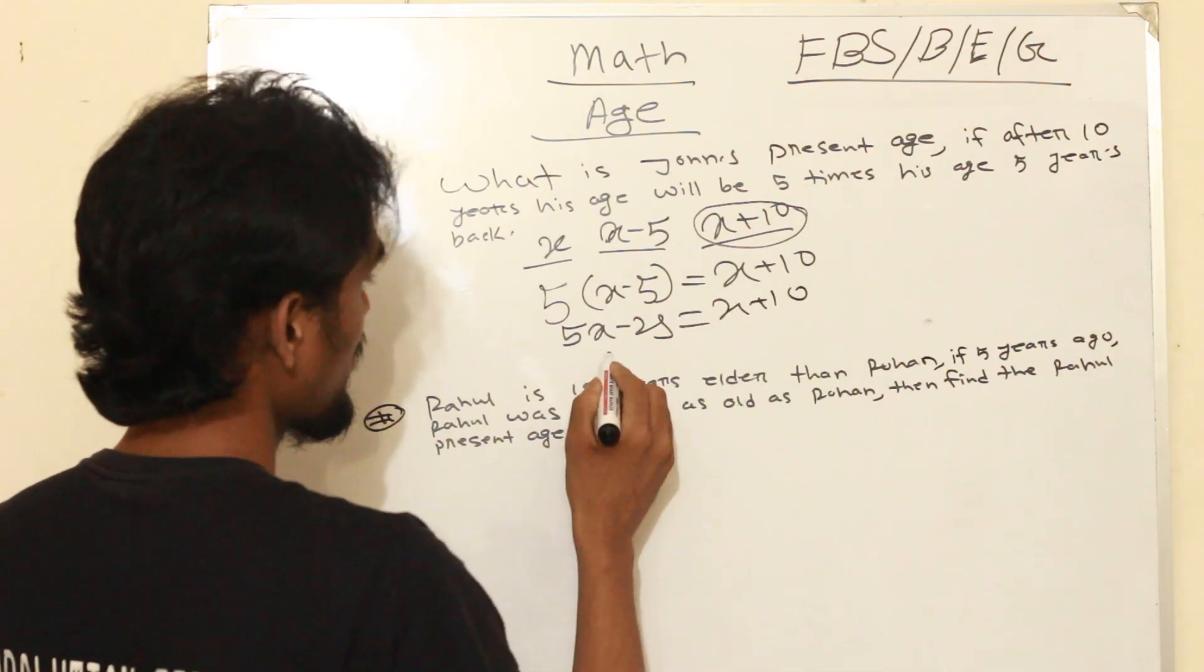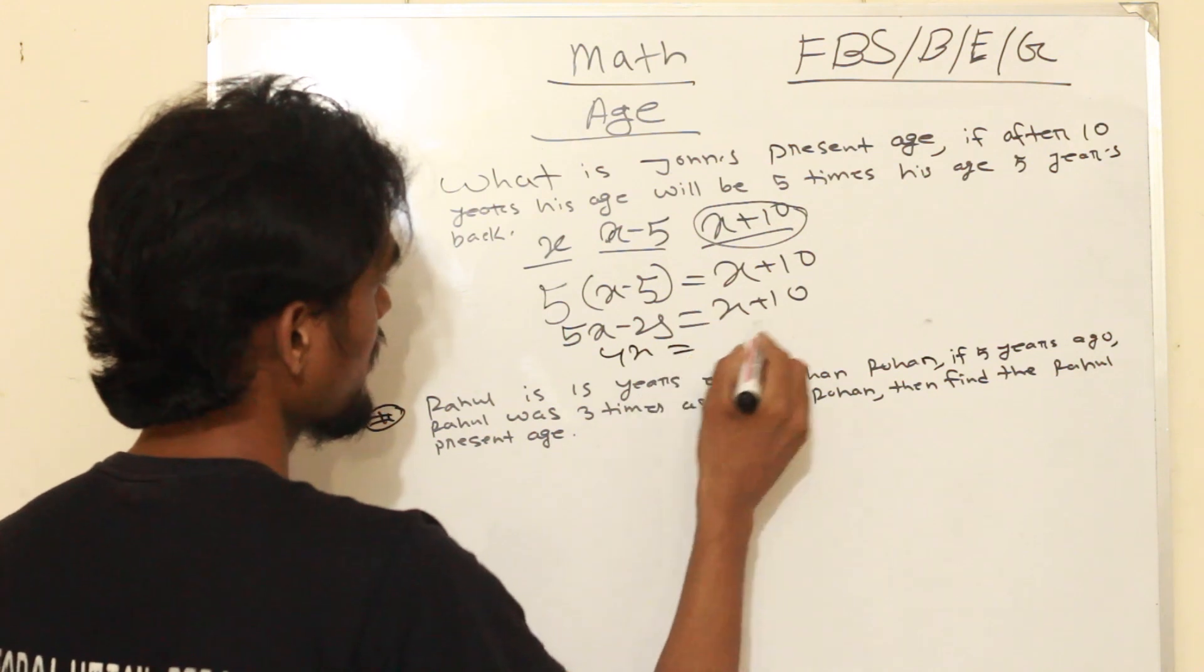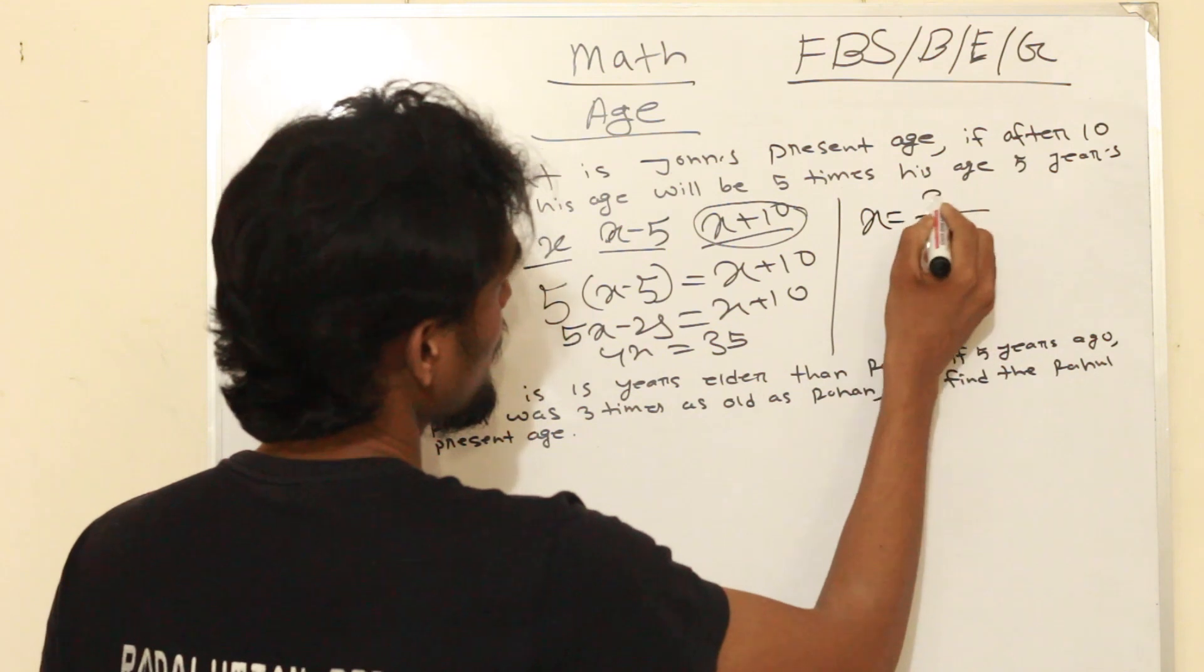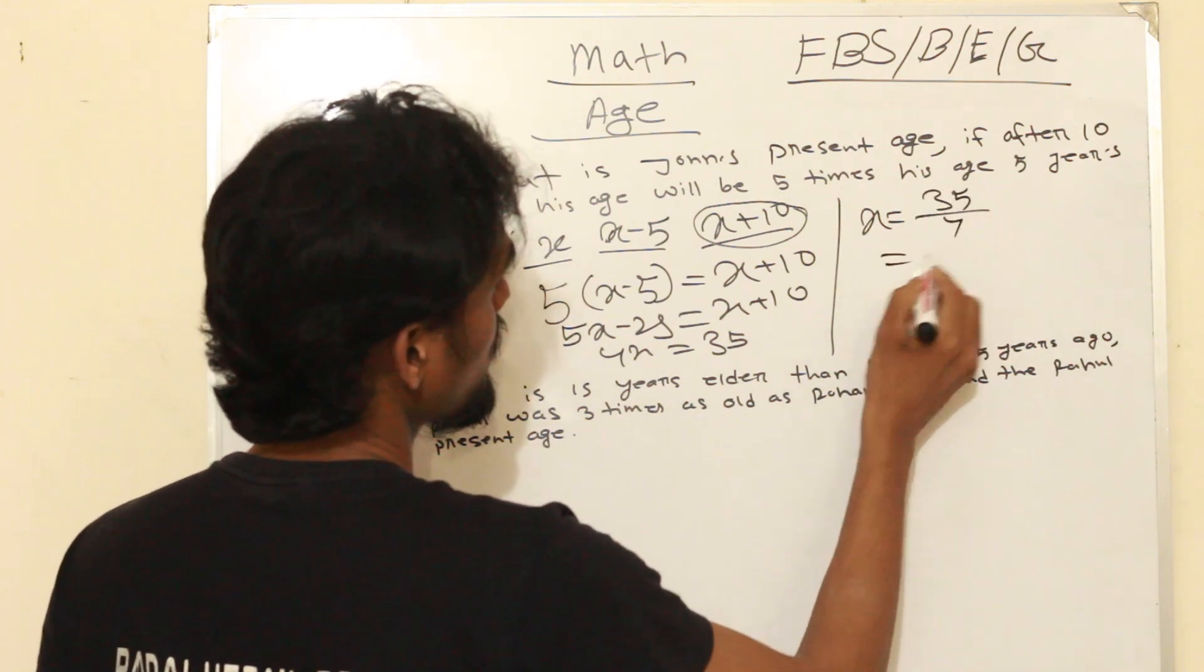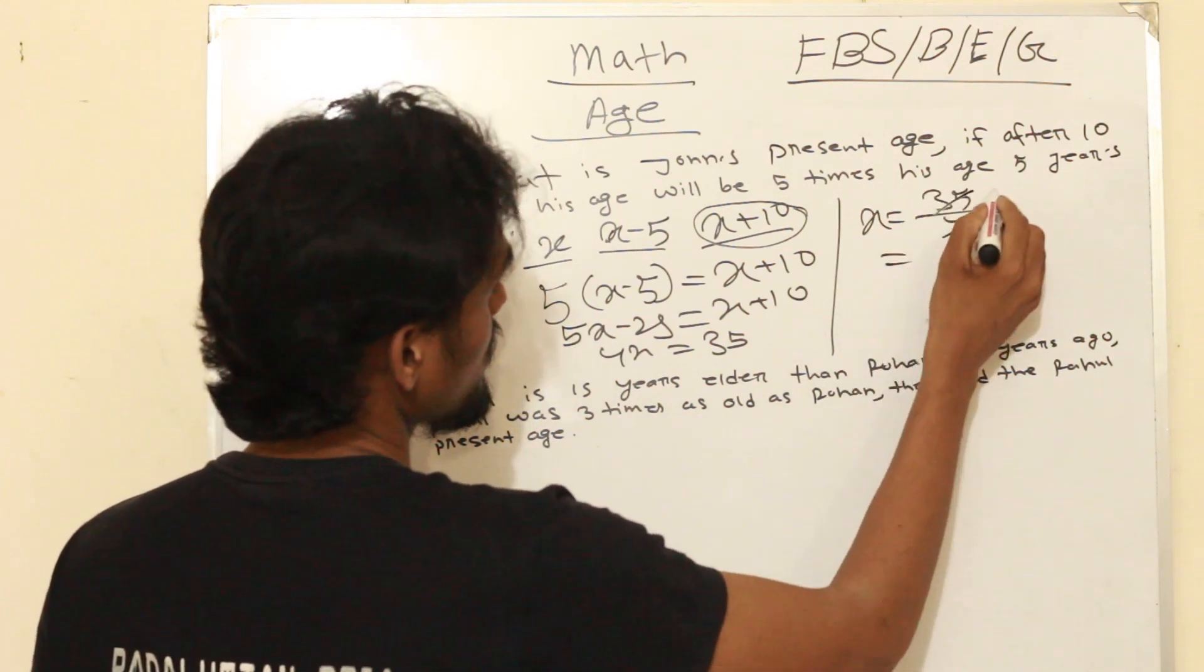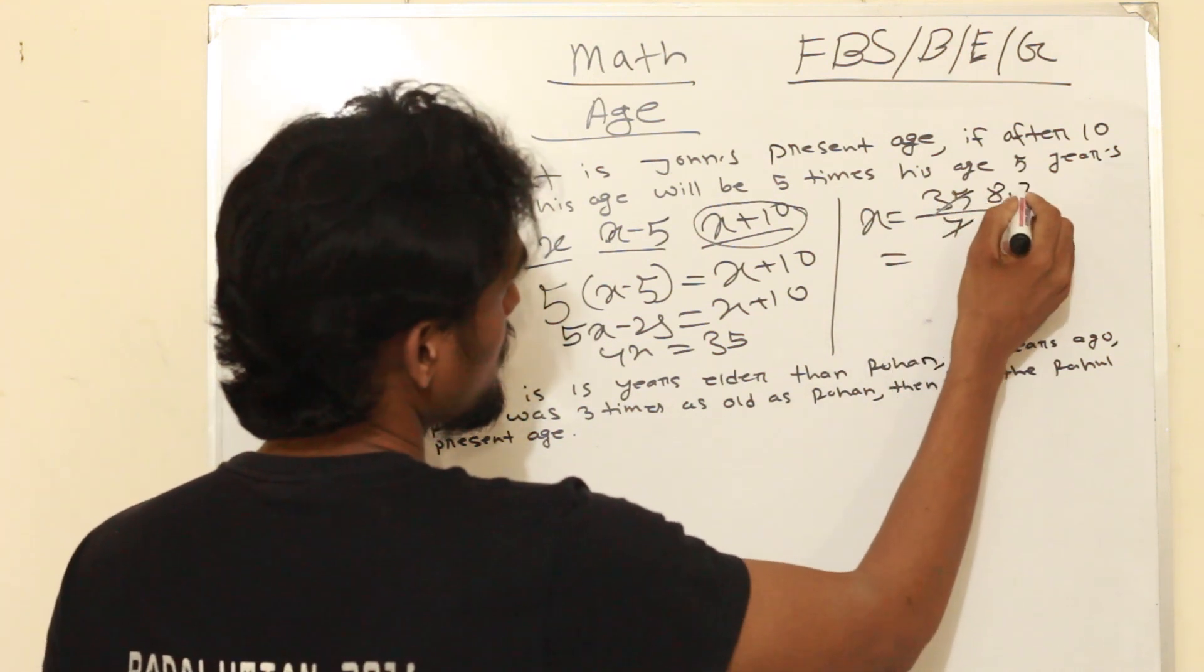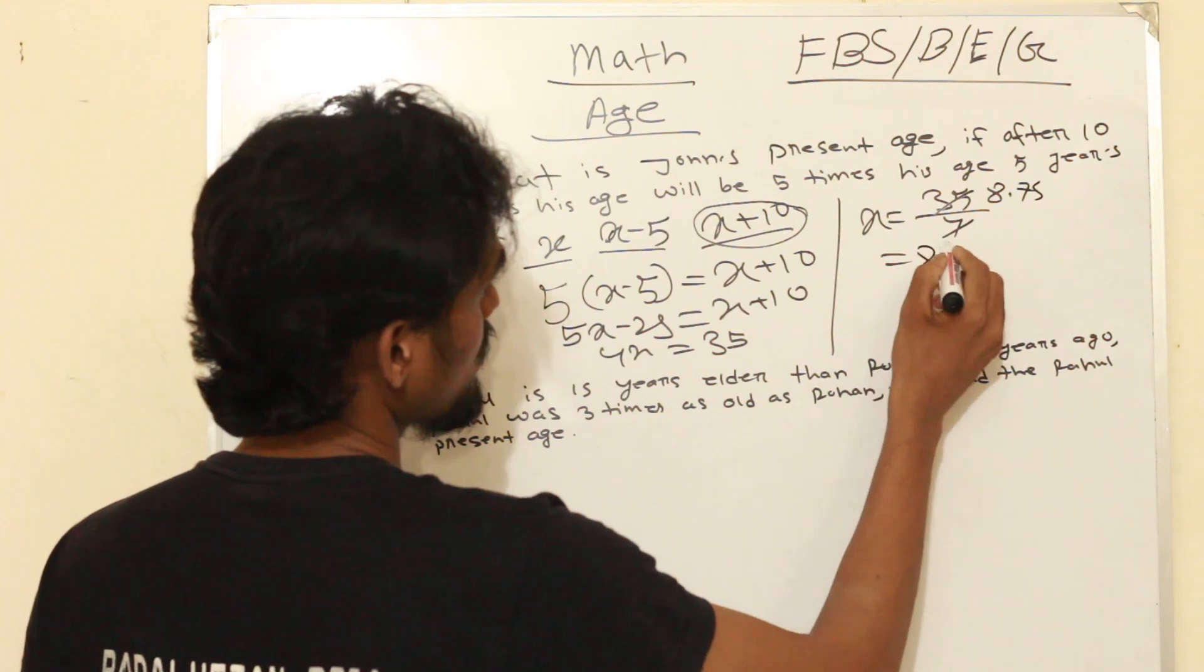So x equals 25, 4x equals 35. Therefore 4x equals 35, so x equals 35 by 4. That gives us 8.75, which is 8 years 9 months, or 8.75 years.